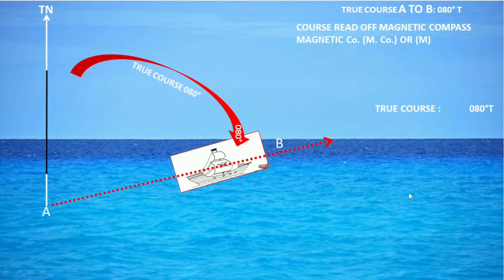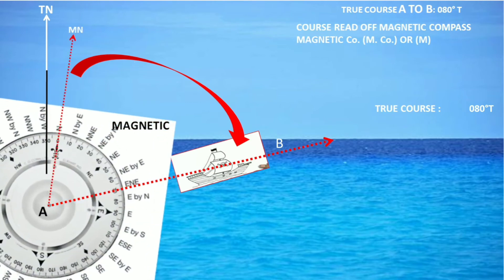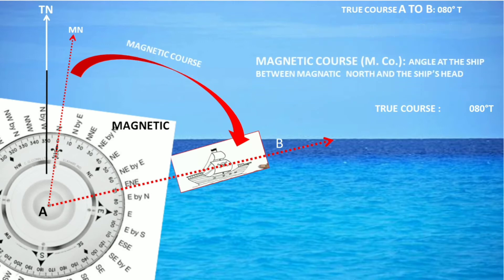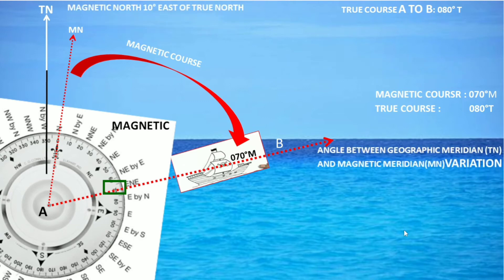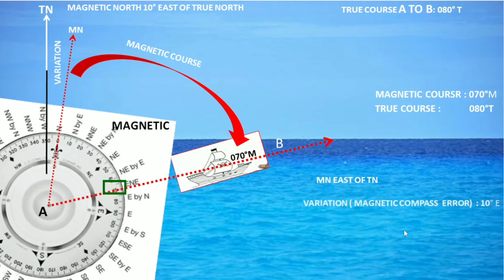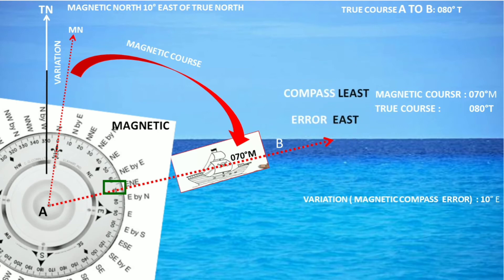I am just showing you on the east side now. If you see the reading of magnetic is 070 — that is your magnetic course. You can see that the difference between both of them is 10 degrees, and magnetic north is to the east of true north, so variation will be 10 degrees east. Compass least, error east — you can see that the compass is less than the true, so the error — variation — should be east: 10 degrees east.